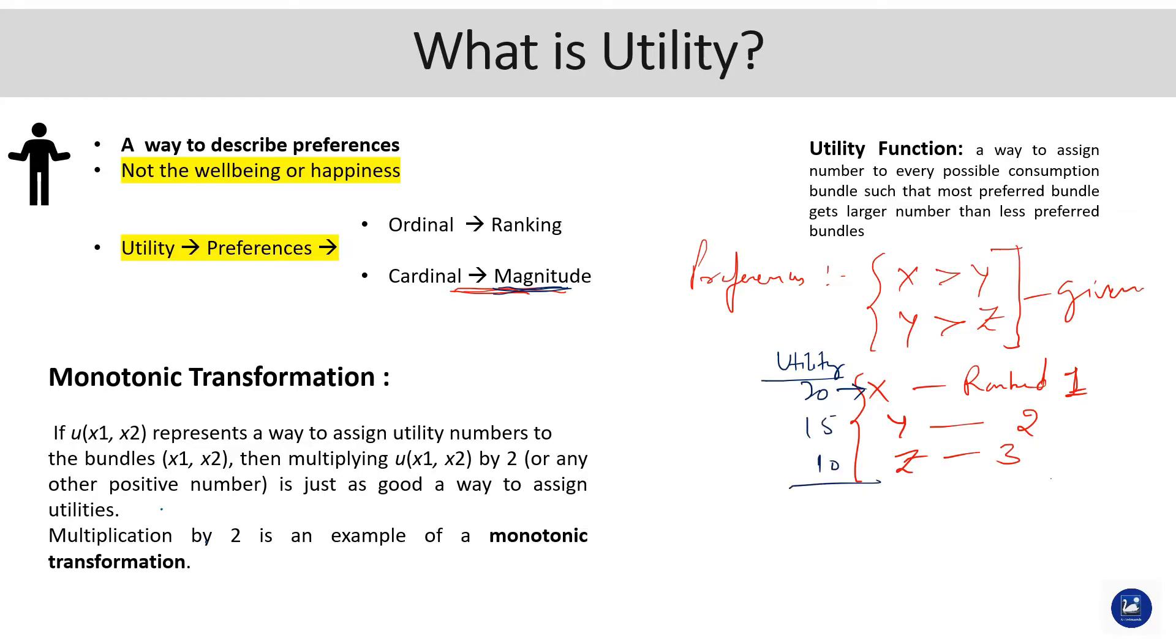Now it hardly matters whether you have 20 or 40 for X, or 10, 15, 16, or 18 for Y, or any amount for Z. What matters here is that the preference ordering relation which is already given to us should hold.